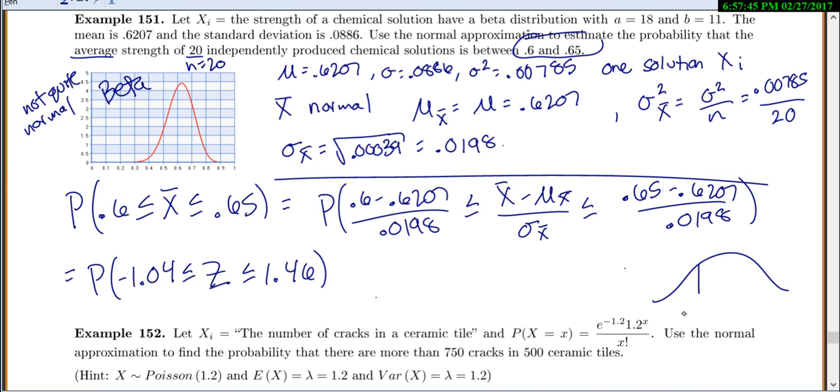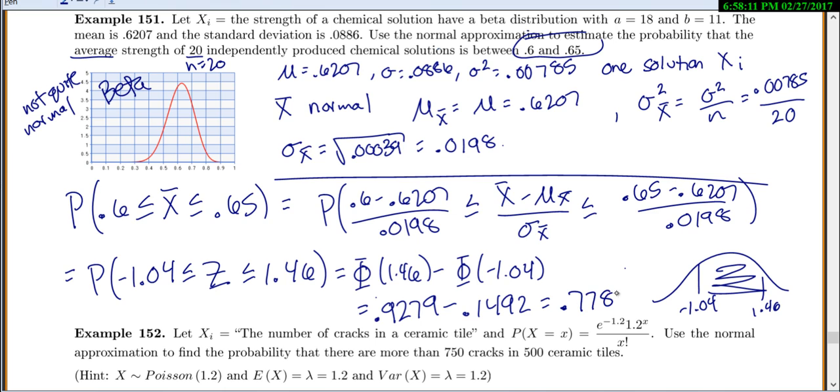If I was to draw my picture, negative 1.04, 1.46, I want the area in between. So you just find each probability and subtract. You'll look at the CDF of 1.46 minus the CDF of negative 1.04. It gives me 0.9279 minus 0.1492, which is 0.7787.